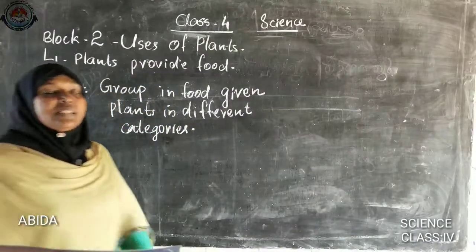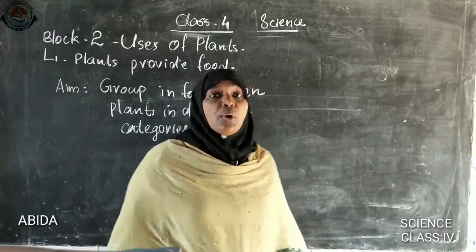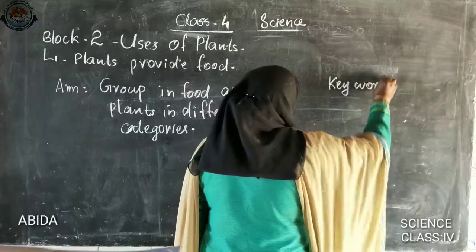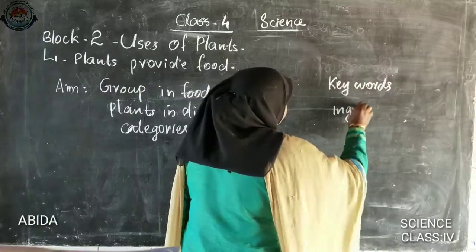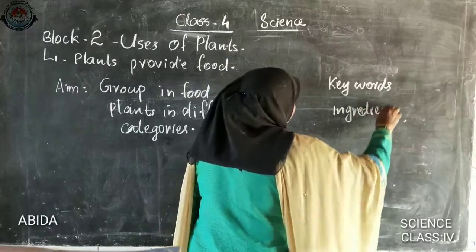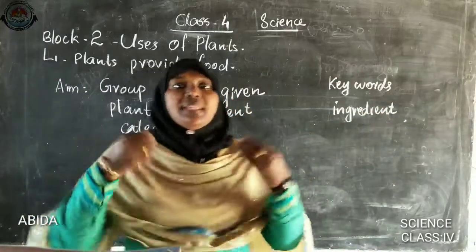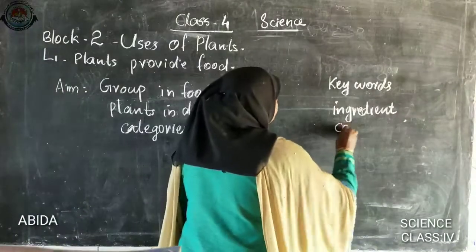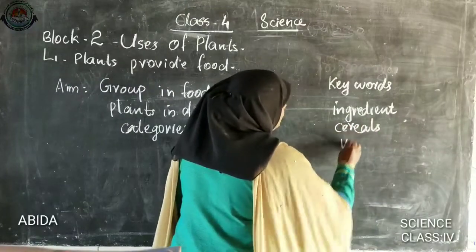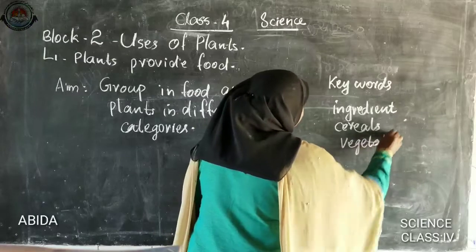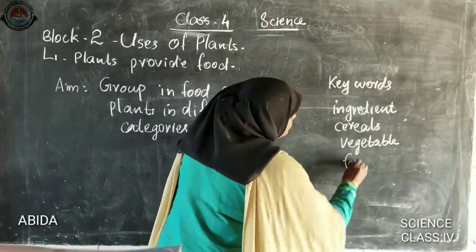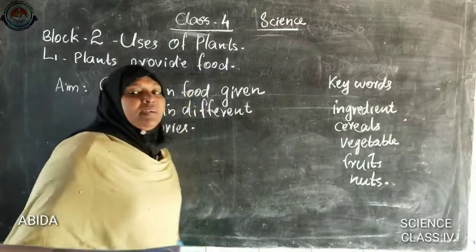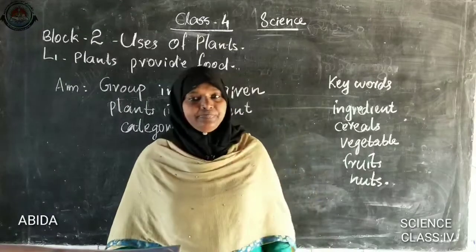Then what are the key words you have to learn from this lesson? The key words are: ingredient — what is included in those items, that is called the ingredient. The second one is cereals, vegetables, fruit, and nuts. These are the key words you have to learn from this lesson. Clear?